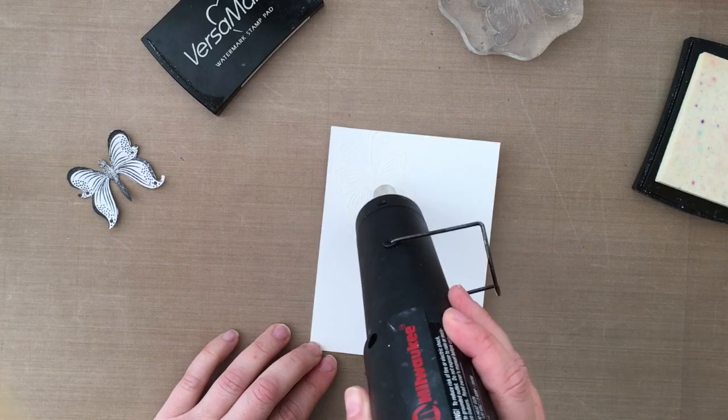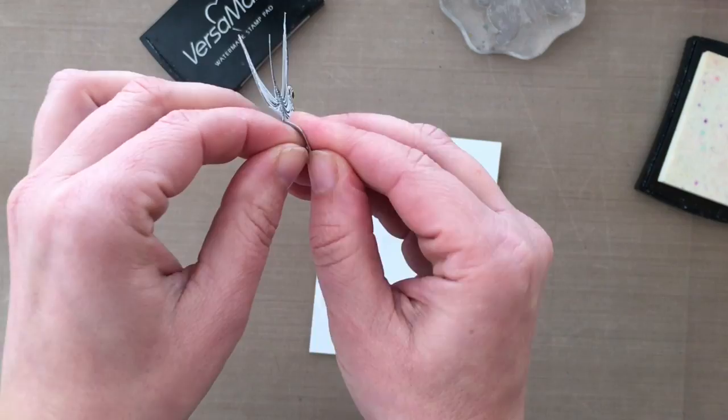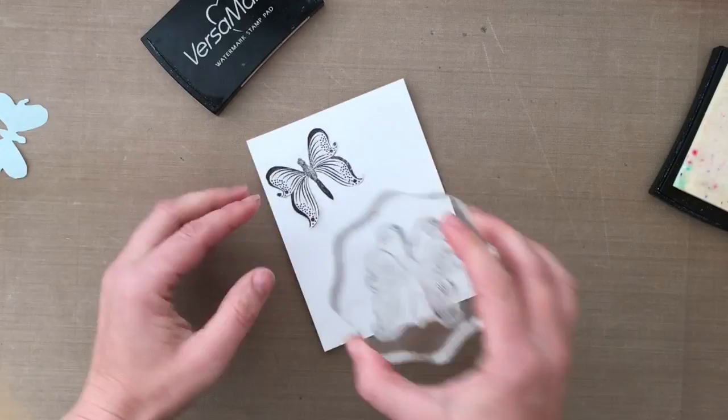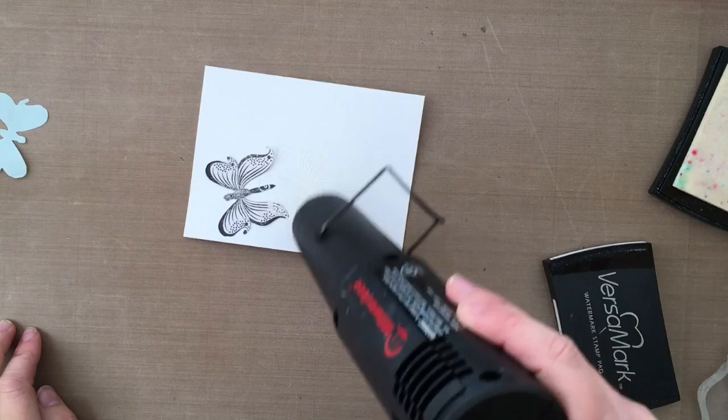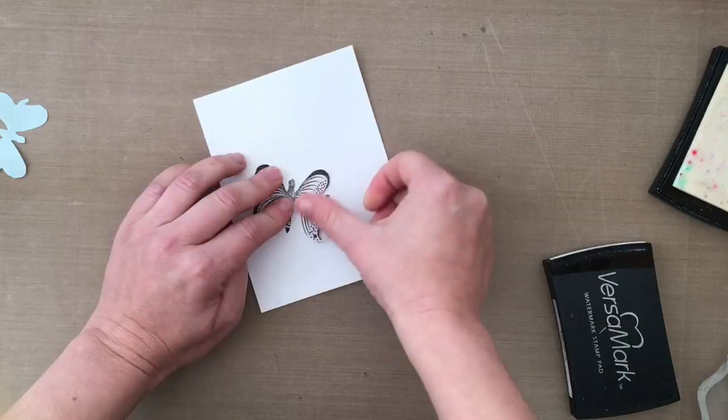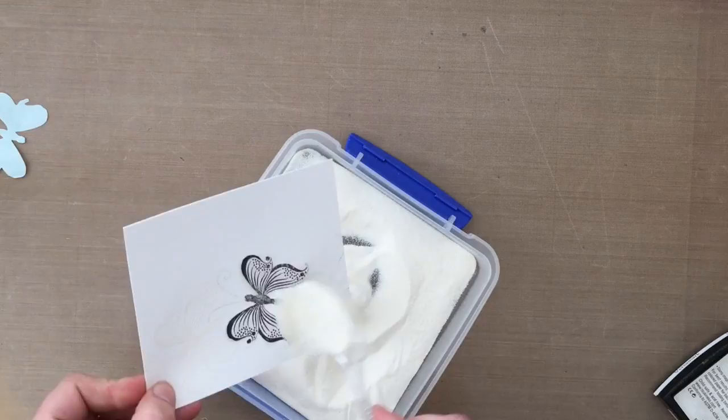I'm going to heat it up with some Versamark ink and then sprinkle embossing powder over the butterflies and emboss it in white. Now I'm overlapping the butterflies, so I went ahead and stamped that butterfly on some masking paper and cut it out so when I overlap those butterflies it blends into each other. I'm going to keep stamping with Versamark, sprinkling on the embossing powder, and heat setting for all four butterflies, and then we'll be able to add some color.